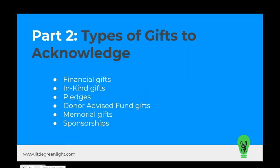Moving into part two: types of gifts to acknowledge. We're going to look at six common types of acknowledgements: financial gifts — probably the most common — in-kind gifts, pledges, soft credits including gifts from donor-advised funds, memorial gifts, and sponsorships. At Little Green Light, we get a lot of questions about these gifts, both on how to enter them and how to acknowledge them. My hope is that we can help you feel confident with these types of acknowledgements so that after this webinar, you'll be in really good shape moving forward.